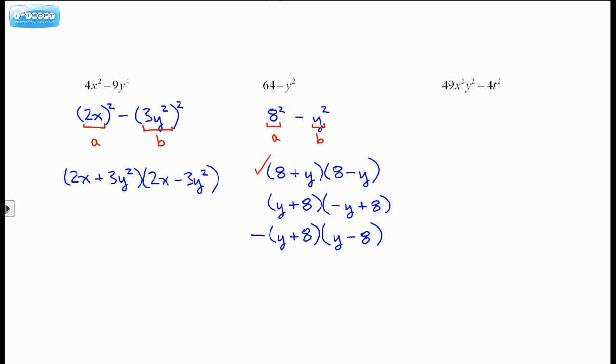Looks like I have a difference of squares. And I'll see if I can write it as such. This would be 7xy all squared minus 2t all squared. So this stuff is my a, that's my b. So I get a plus b, a minus b. And there we go. So that, in a nutshell, factoring a difference of squares.